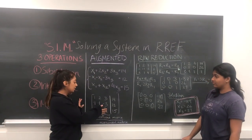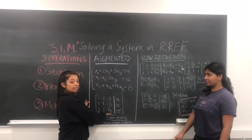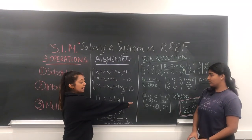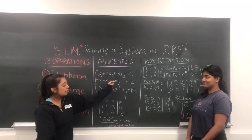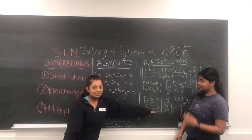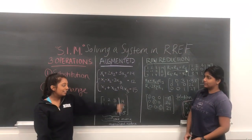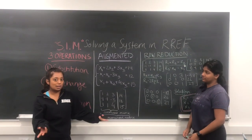Our goal is to convert the coefficient matrix into reduced row echelon form, where we have ones going down the diagonal with zeros above and below it, which is also known as reduced row echelon form.